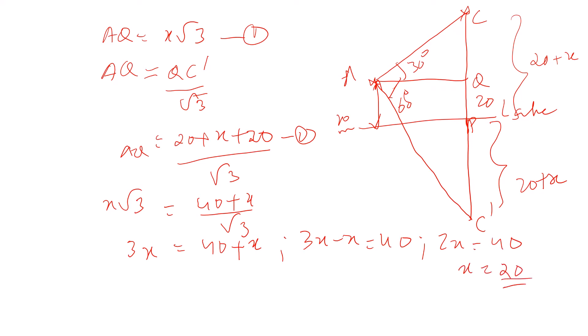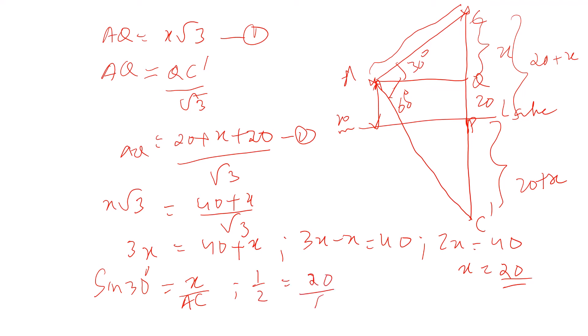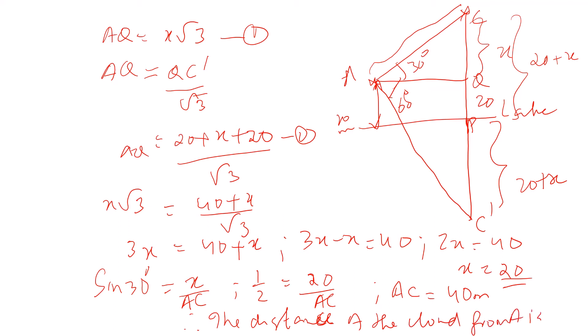We need to find AC, the distance of the cloud from A. Using sin 30 equals opposite by hypotenuse, sin 30 equals x by AC. So 1 by 2 equals 20 by AC, giving AC equals 20 times 2, which is 40 meters. Therefore, the distance of the cloud from A is 40 meters.